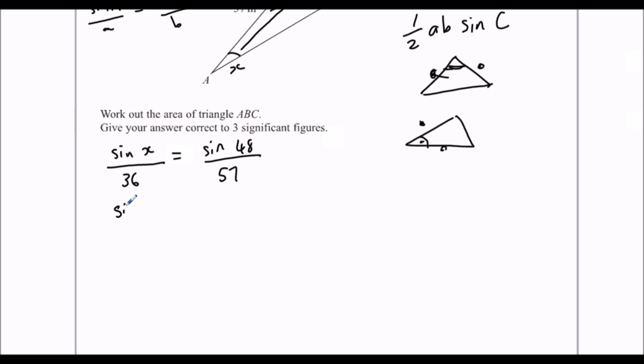So sin x is, therefore, we get sin x by itself by multiplying both sides by 36. So sin 48 over 57 times 36. And then we can put this in the calculator now, and we're going to get x by itself by shift sign. So it's shift sign whatever this is, the answer to what you put in the calculator. And that should give you 27.99. I'll write it all down, 27.99241211. I'm not going to round this stage because I know I'm doing a multiple stage question. I'm going to use this answer.